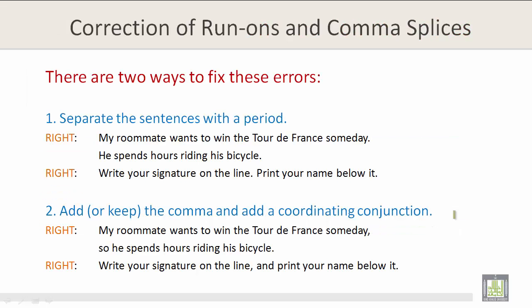There are two ways to fix these errors. The first is to separate sentences with a period. For example: 'My roommate wants to win the Tour de France someday.' Period. 'He spends hours riding on his bicycle.' Or: 'Write your signature on the line.' Period. 'Print your name below it.'